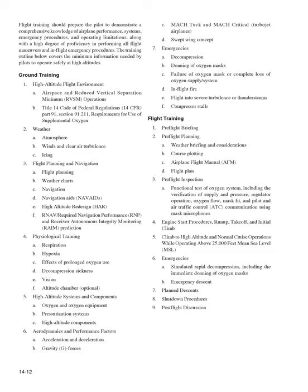Flight training topics include: (1) Pre-flight briefing; (2) Pre-flight planning — weather briefing, course plotting, AFM review, flight plan; (3) Pre-flight inspection — functional test of oxygen system including verification of supply and pressure, regulator operation, oxygen flow, mask fit, and pilot/ATC communication using mask microphones; (4) Engine start procedures, run-up, takeoff, and initial climb; (5) Climb to high altitude and normal cruise operations while operating above 25,000 feet MSL; (6) Emergencies — simulated rapid decompression including immediate donning of oxygen mask, and emergency descent; (7) Planned descents; (8) Shutdown procedures; (9) Post-flight discussion.